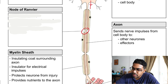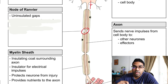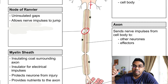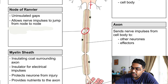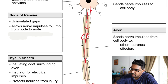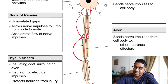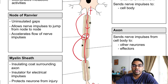The node of Ranvier consists of all the uninsulated gaps between the myelin sheaths. Its function is to speed up nerve impulse transmission by allowing the nerve impulses to jump from node to node, rather than passing through continuously — this is how it accelerates the flow of nerve impulses.